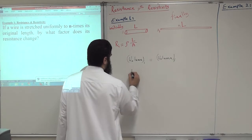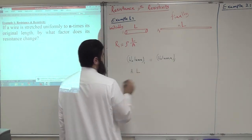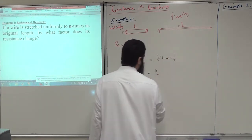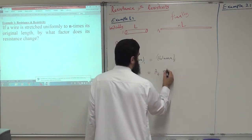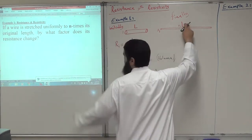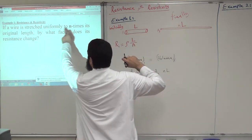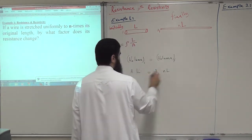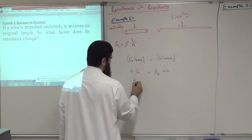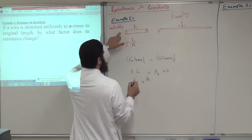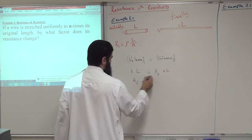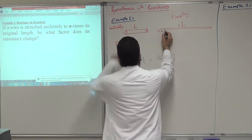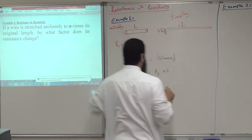The initial volume is the cross-sectional area multiplied by L, and this equals the final cross-sectional area A_final multiplied by nL. Since the length becomes n times the original, L cancels with L, and we find that A_final equals A_initial divided by n. This is a very important result.